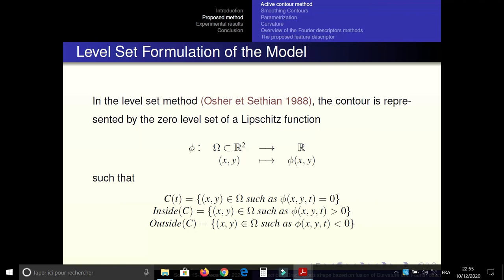Level set formulation of the Chan-Vese model. In the level set model, the contour is represented by the zero-level set of a Lipschitz function defined as follows. Then c presents the zero-level of Lipschitz function and inside contour defined by the positive value of Lipschitz function, outside is defined by negative values.